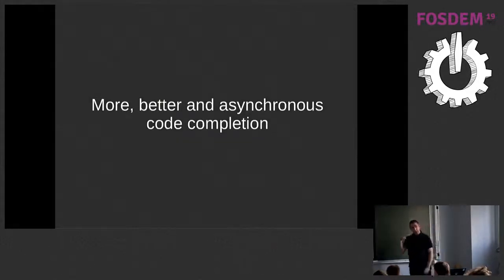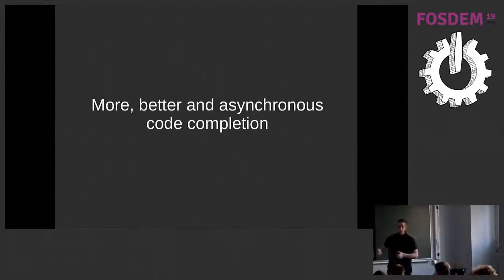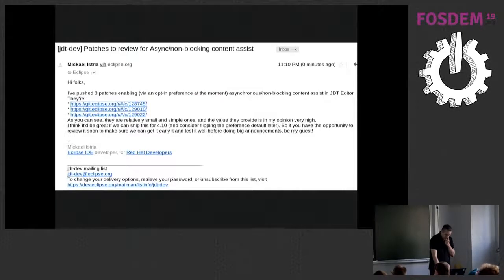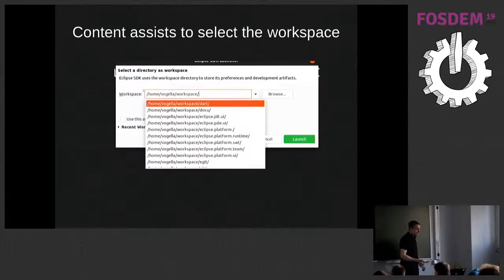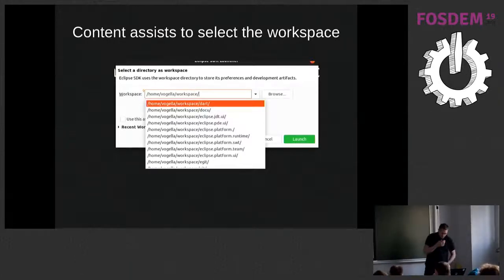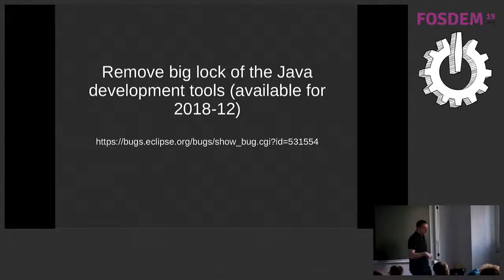We're also trying to give you better asynchronous code completion. At the moment, code completion in Eclipse in most cases is synchronous — so if you have a lot of jar files in your classpath, code completion can block the UI. This should be gone once these patches go in. We also have code completion in places where you'd expect it — for example, the workspace selection dialog now has code completion to select the path you want, and we want to introduce this in several other places.